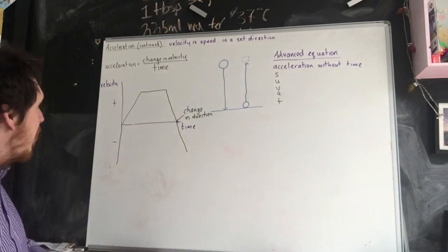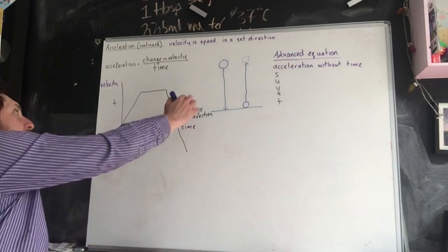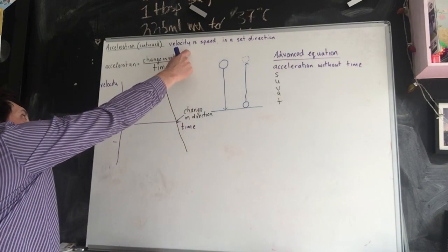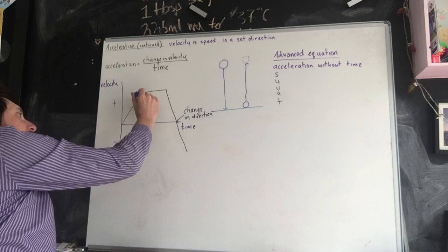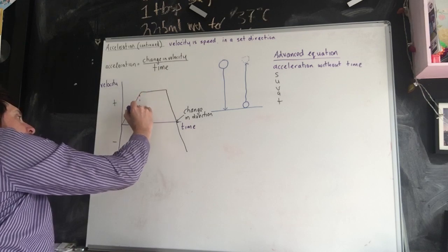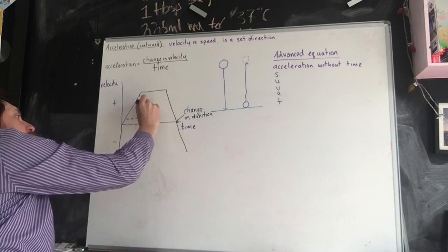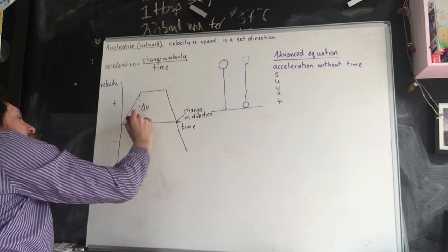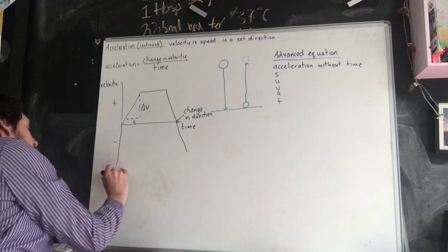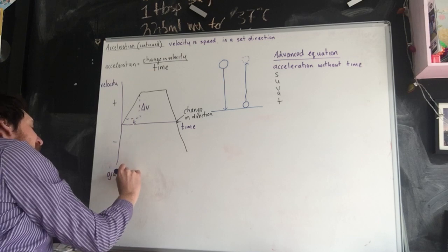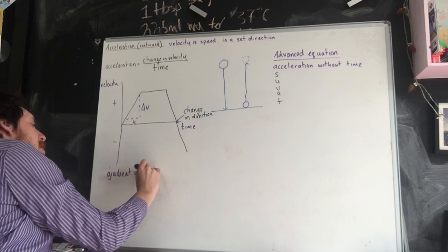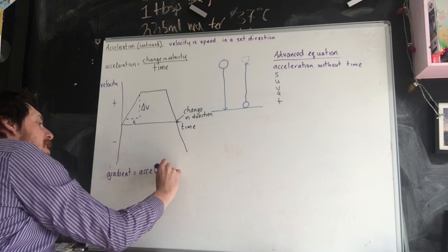Calculations that you could be expected to do. We know that if this is on our y-axis and this is on our x-axis, that if we take the gradient where we've got change in velocity here, and we've got time, then the gradient is equal to that acceleration calculation.